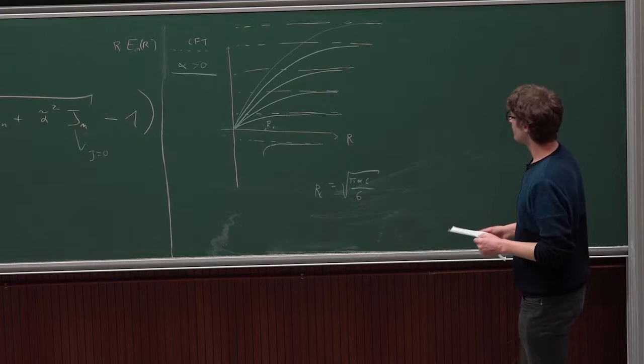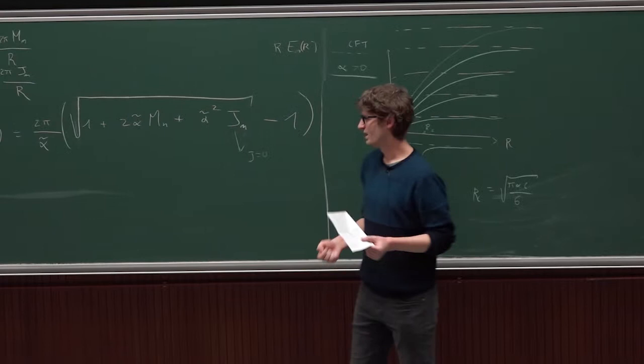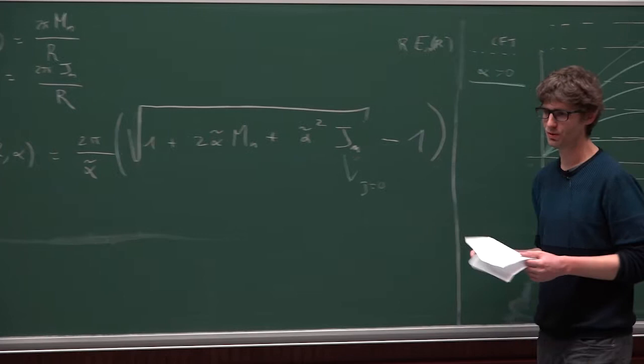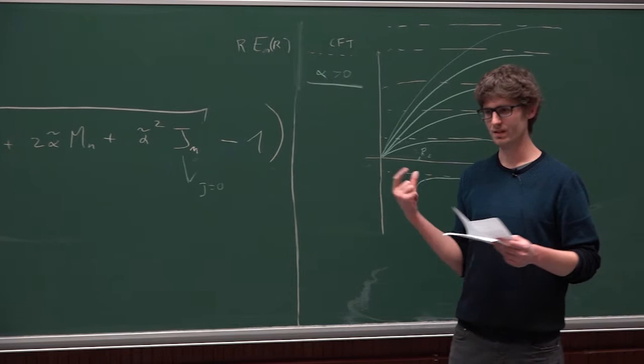Well, in this case, you can also see, so yesterday we saw classically the emergence of the Nambu-Goto action, and this is, if you take an appropriate central charge, this is the spectrum of the Nambu-Goto string. Actually, if you get the spectrum that you get in quantization in the target space dimensions, if you take the central charge D minus two.